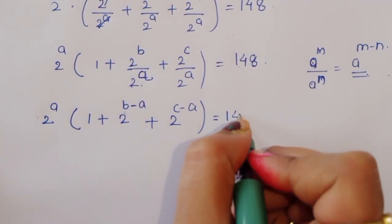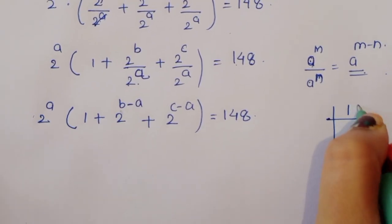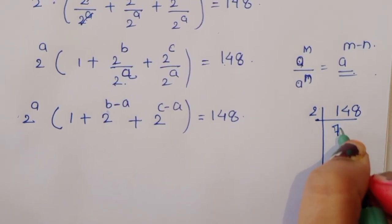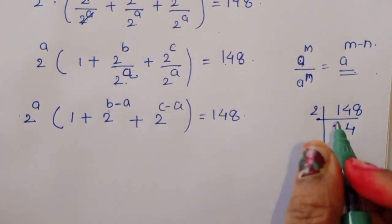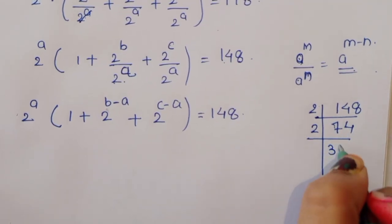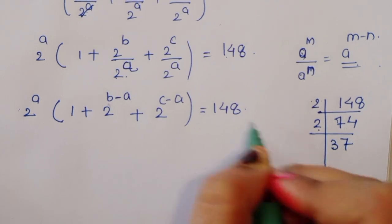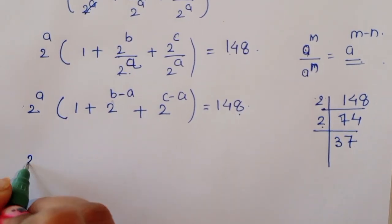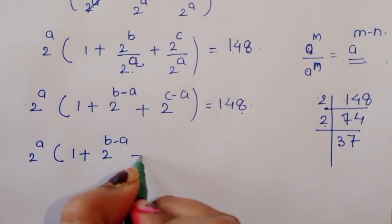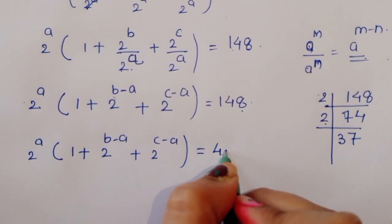Now we factor 148. We get 2 twos are 4, times 37 is 148. So we can write: 2 power A times (1 plus 2 power B minus A plus 2 power C minus A) is equal to 4 times 37.